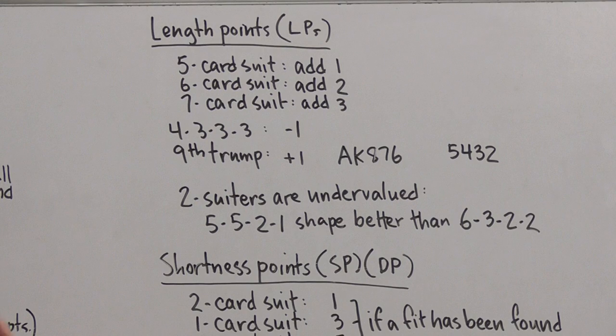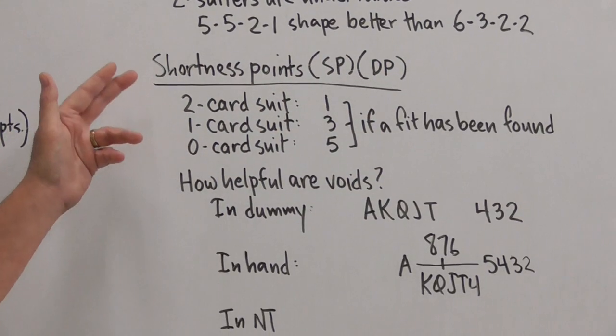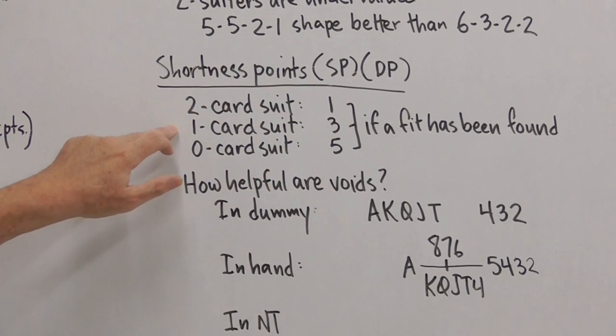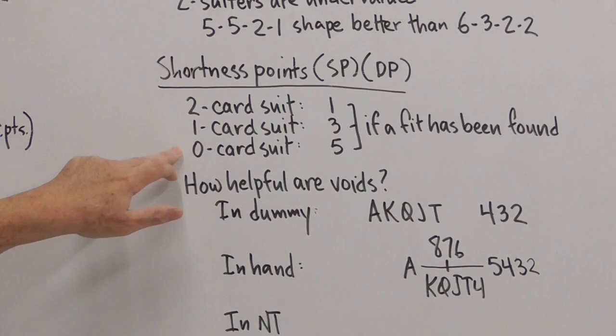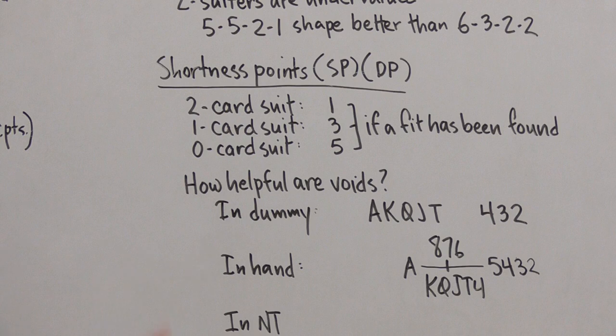Now we're going to consider shortness points, which are sometimes also called dummy points. And we're going to give ourselves one point for a two-card suit, a doubleton, three points for a one-card suit, and five points for a void, a zero-card suit, but only once a fit has been found. Obviously, a void in partner's suit is not so good, and a void in no trump is not so good.